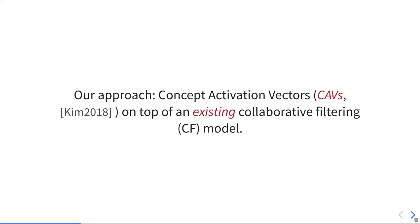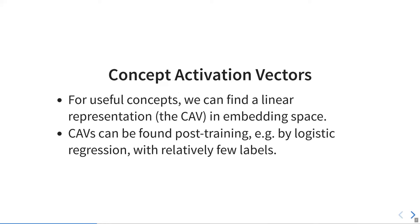Our approach to circumvent this is to use concept activation vectors, or CAVs, on top of an existing collaborative filtering model. The general idea is that for useful concepts we can find a linear representation of this concept, which is the concept activation vector, in the embedding space that the collaborative filtering model learned. These CAVs can be found after training, for example, using logistic regression. Because they are linear models, we require relatively few labels to learn them.